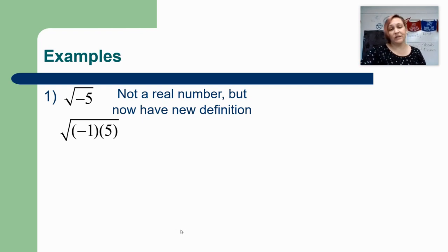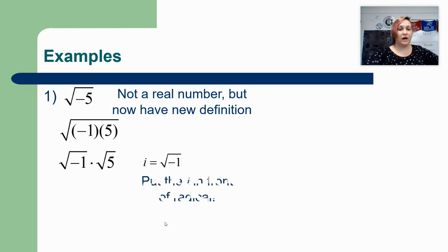And then we can split this if we want to into the square root of negative 1 and the square root of 5. You can do that anytime you have a multiplication problem. And we just learned on the previous slide that the square root of negative 1 is actually the letter i. So I can replace it or substitute it with the letter i. And that's it.